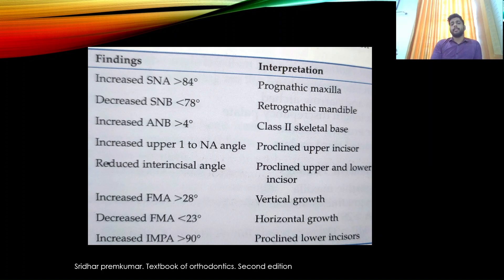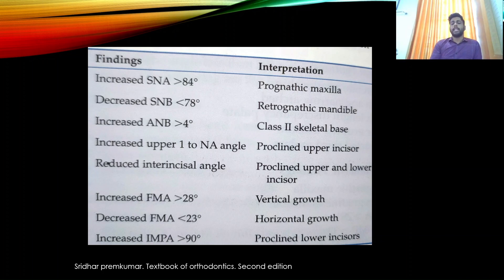SNA is the angle connecting sella to nasion and nasion to point A, with a normal value of 82 ± 2 degrees. In a Class 2 case, an increased SNA greater than 84 degrees represents a prognathic maxilla. SNB has a normal value of 80 ± 2 degrees; a decreased SNB less than 78 degrees indicates a retrognathic mandible.